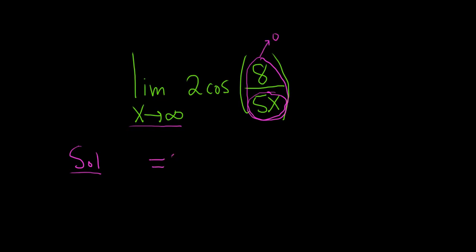So this is equal to 2 times the cosine of 0. And the cosine of 0 is 1. So this is just 2 times 1. And so the answer is just 2, and that would be it.